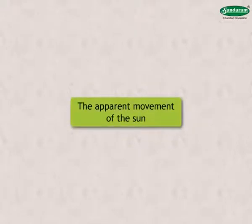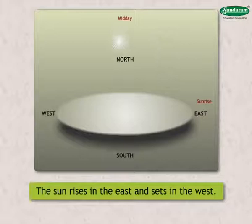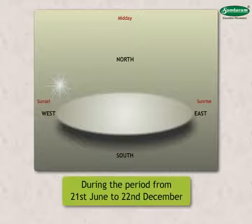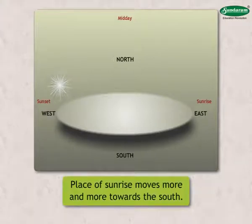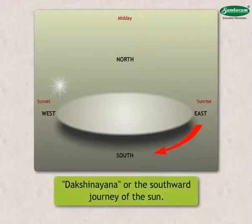Let us study why and how seasons occur. Let us study the apparent movement of the sun. We all know that the sun rises in the east and sets in the west. However, the place where the sun rises keeps changing every day. During the period from 21st June to 22nd December, the place of sunrise moves more and more towards the south. That is why this period is called Dakshinayana, or the Southward Journey of the Sun.